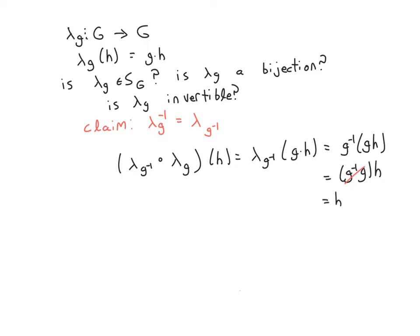So let's create that permutation. One choice would be to multiply. So given any group element H, the permutation, lambda sub G, is going to multiply H on the left by GH.